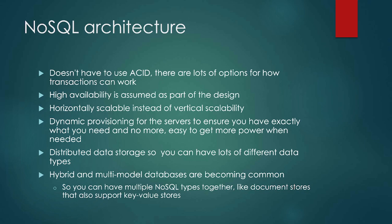NoSQL also supports distributed data storage, so you can have lots of different data types. One thing that makes NoSQL different — not necessarily better, just different — is that you're not limited in data types the way SQL limits them. You can also do hybrid and multi-model databases, meaning you can have multiple types of NoSQL at once, like document stores that also support key-value stores. It's easier to mix and match based on what you need.